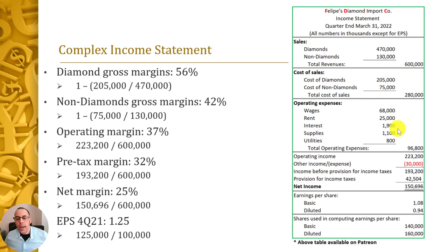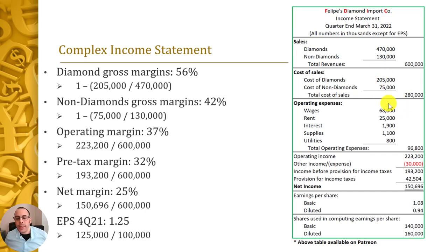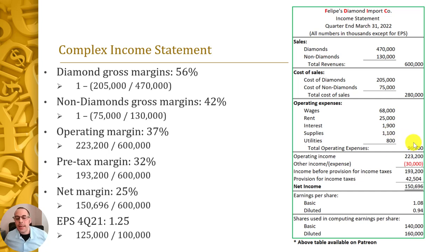The cost related to generating the $470 million in diamond revenue is $205 million; the cost related to $130 million in non-diamond revenue is $75 million, for total cost of sales of $280 million. Operating expenses are indirectly related to generating revenue. Payroll appears in both cost of revenue and operating expenses: a warehouse employee's salary is cost of revenue, but an accountant at corporate headquarters is an operating expense. Rent similarly can appear in both. Total operating expenses are $97 million, and operating income is $223 million.